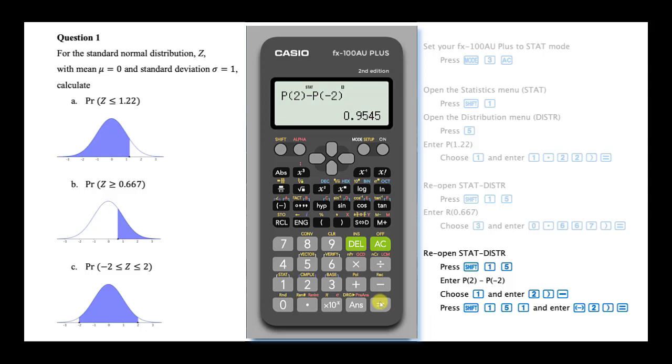0.9545. This result is a more accurate version of the 95% within 2 sigmas of the mean rule that we sometimes use.